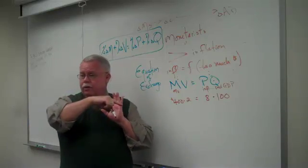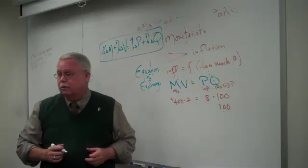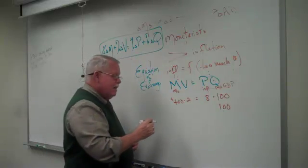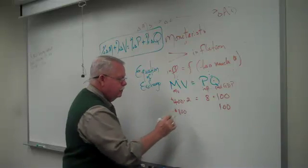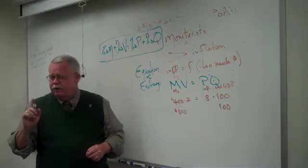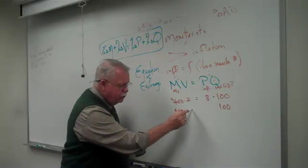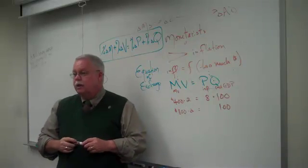Suppose next year they also produced 100 umbrellas, but they let the money supply go to $800. If the velocity didn't change, if this was still 2 for the velocity, what was the price for umbrellas? $16.